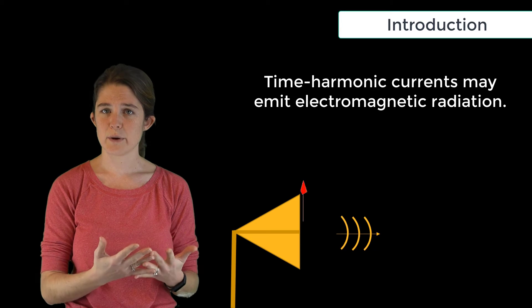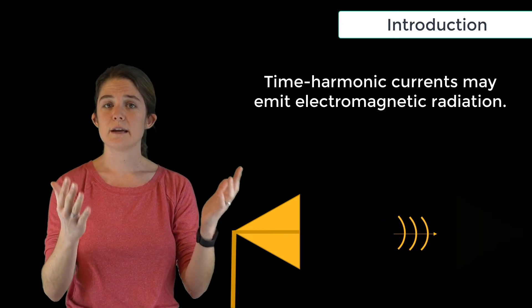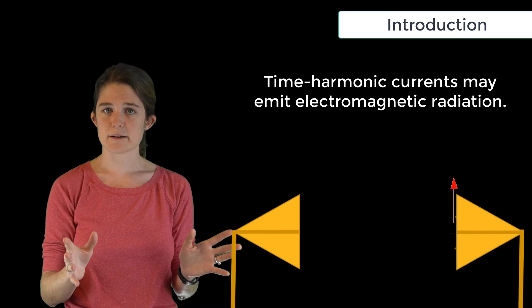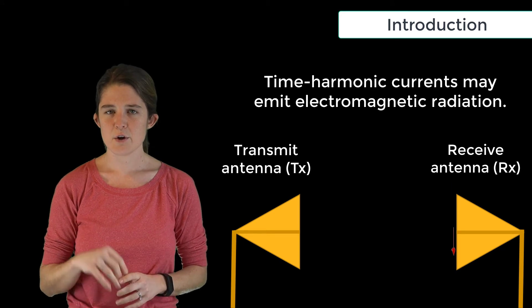These waves travel outward from the source, and if they are incident on a conductor, they can create currents on the surface of that conductor. This is the science of antenna engineering: designing structures to create specific currents that can radiate electromagnetic signals.